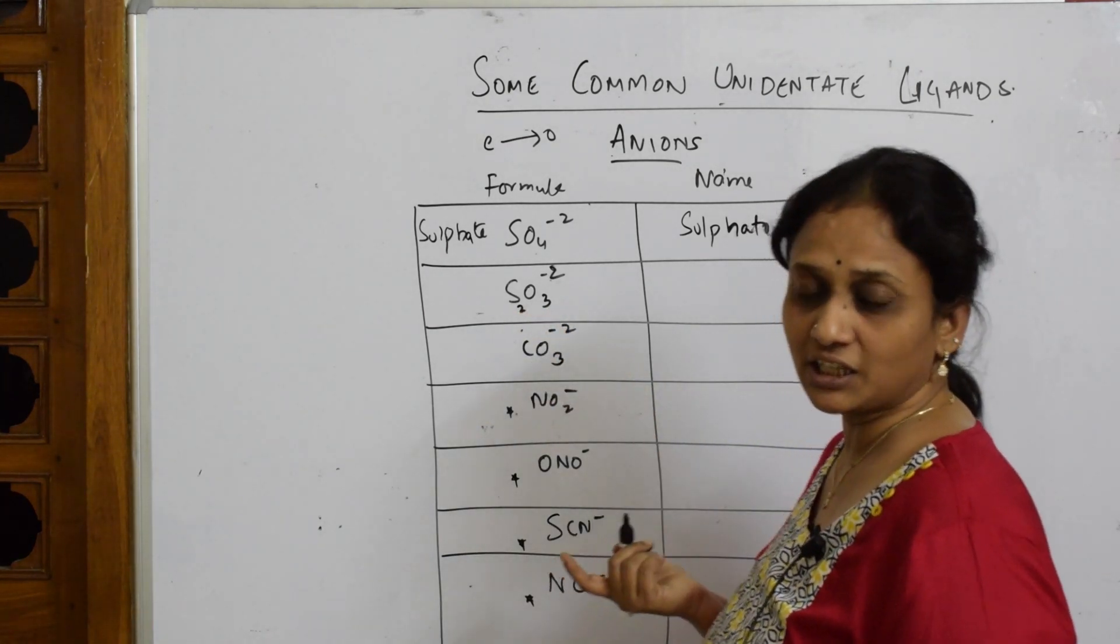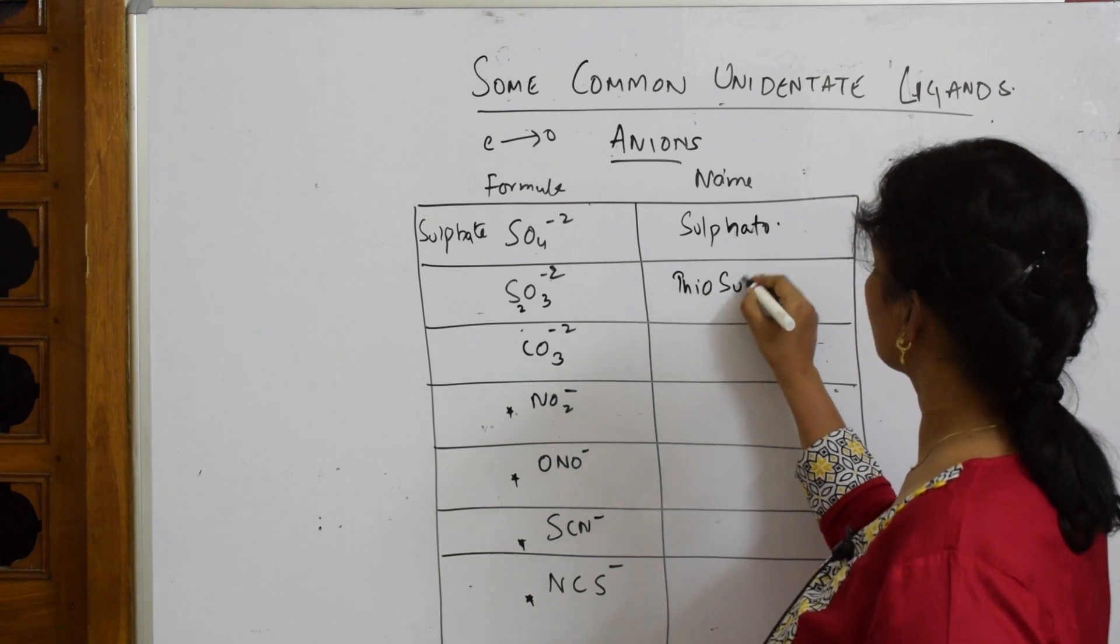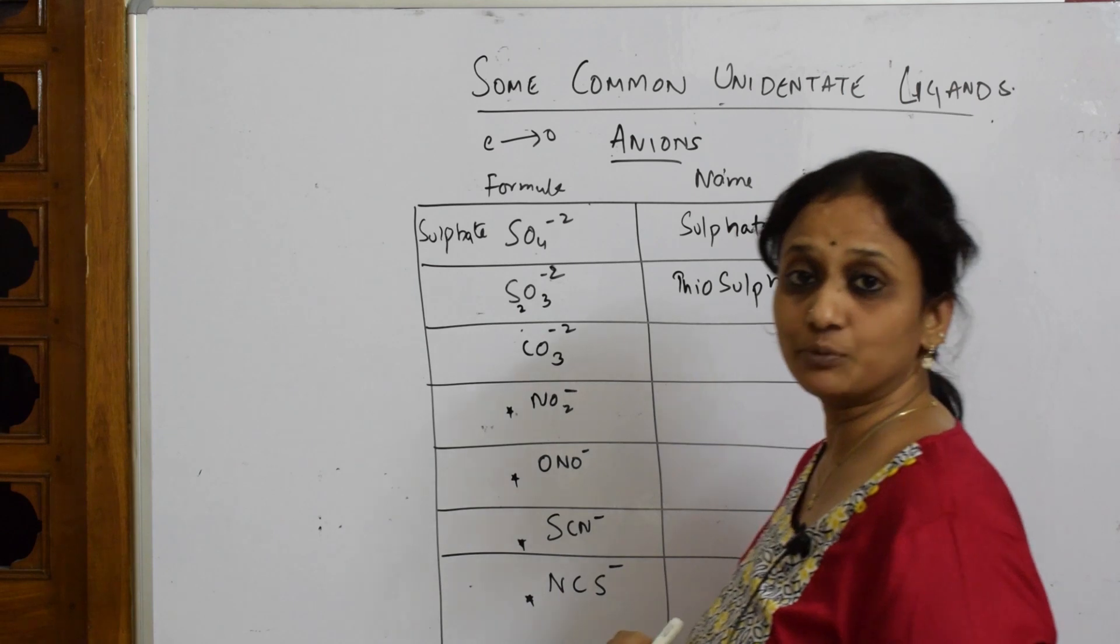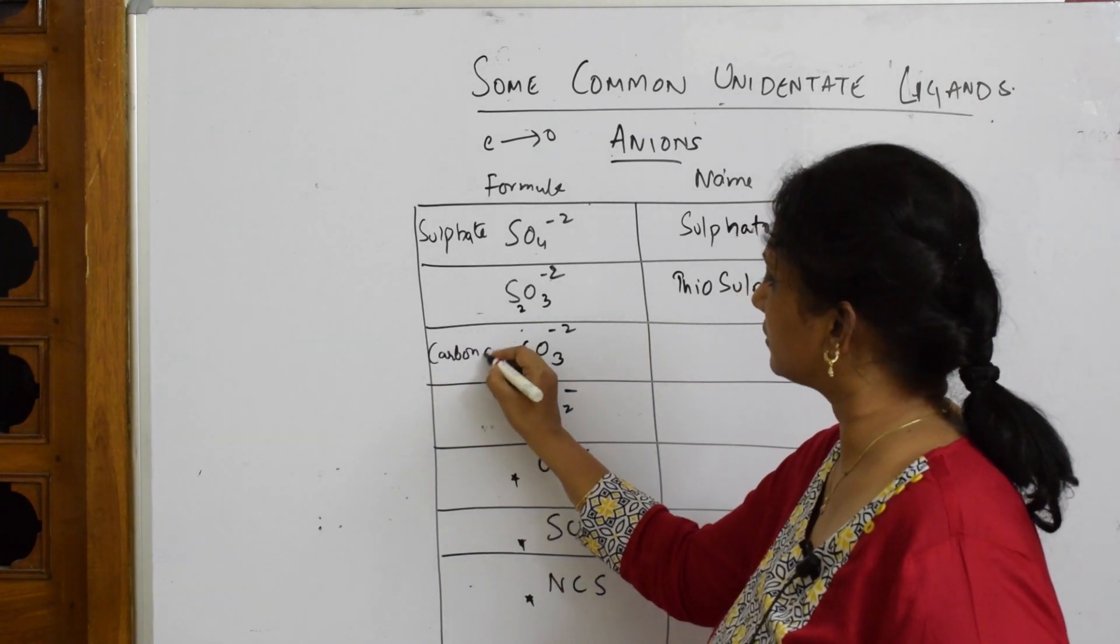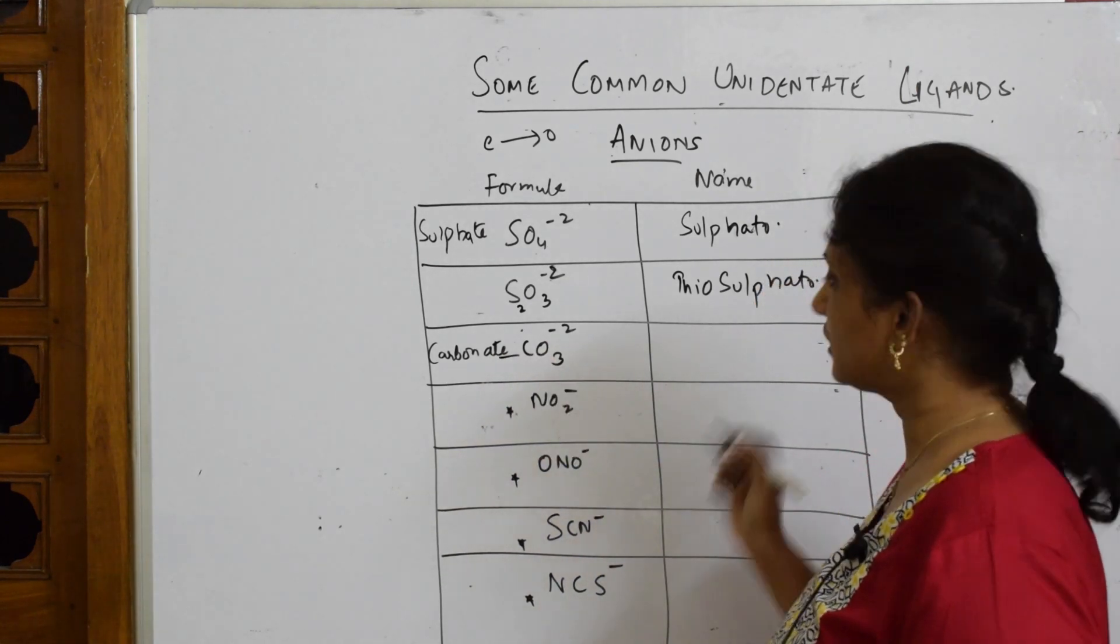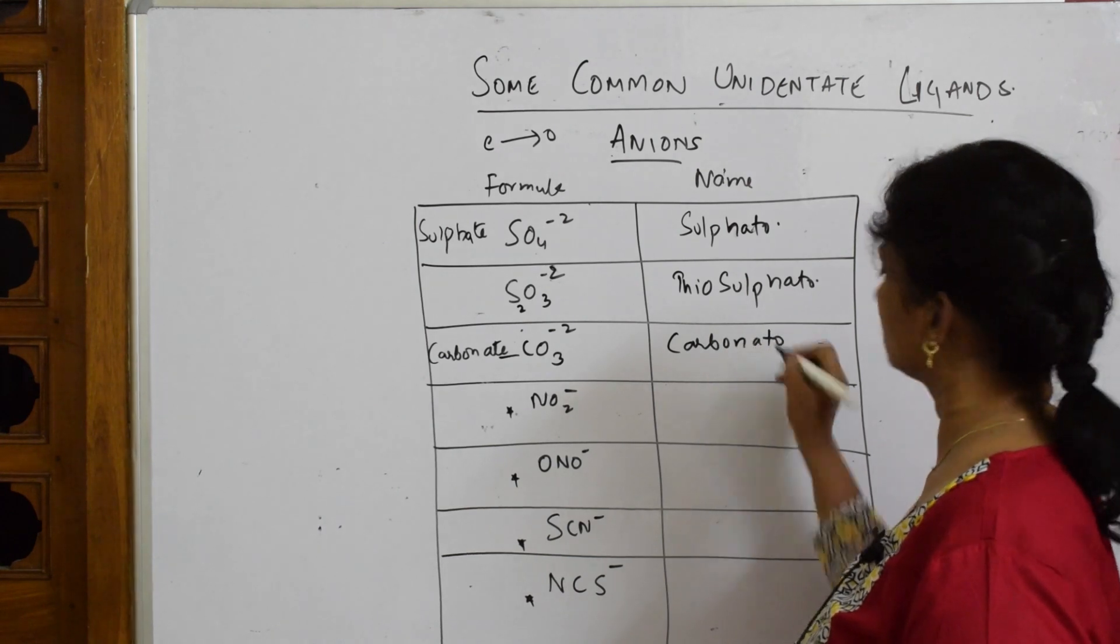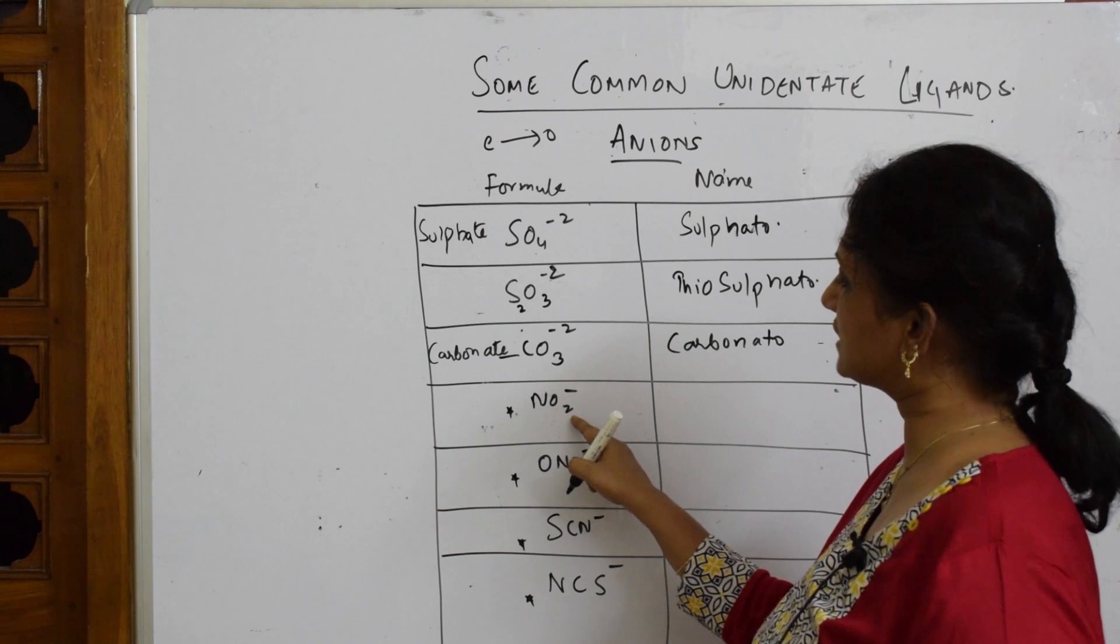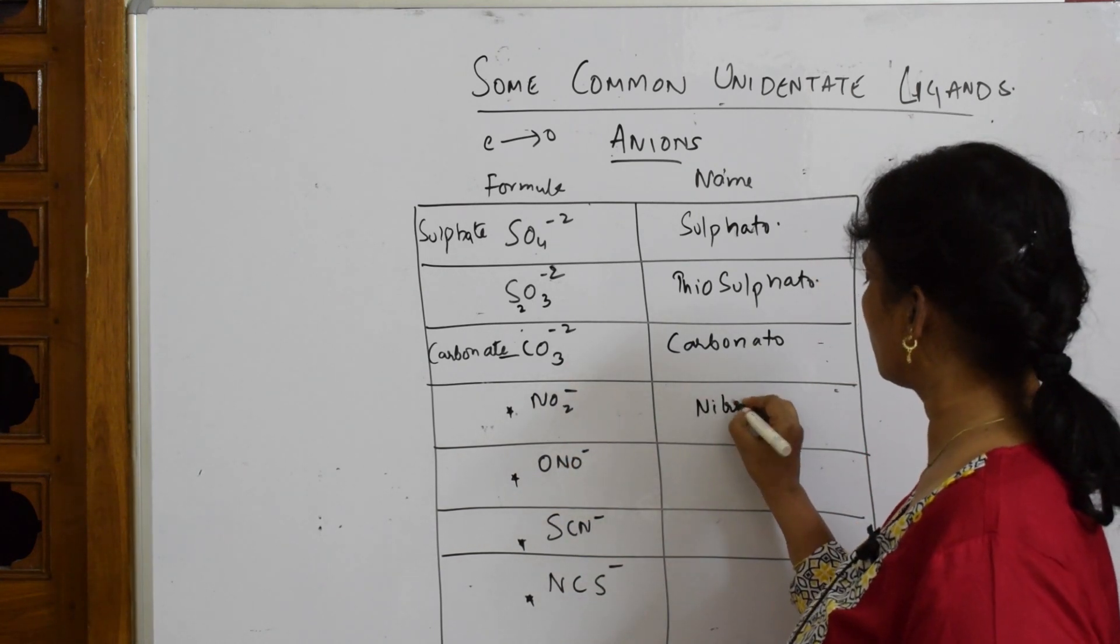Now this is carbonate. Let us write carbonate - take out this 'e' and replace by 'o' - 'carbonato'. So I said these are exceptions, a little bit different. Though they are negative anionic ligands, you're going to name this as 'nitro', you're going to name this as 'nitrito'.